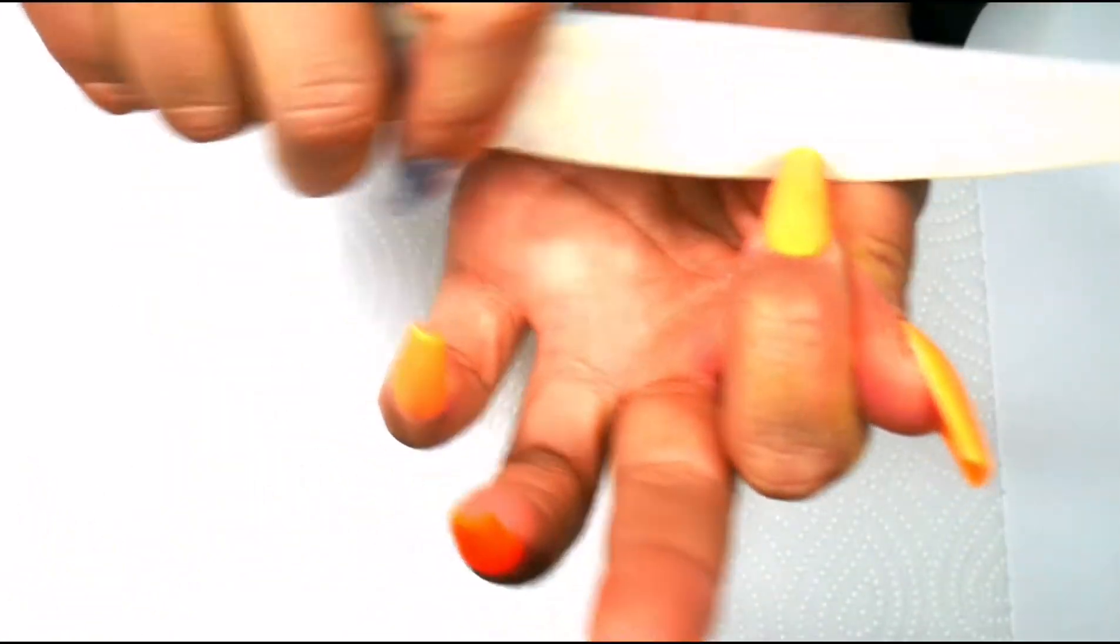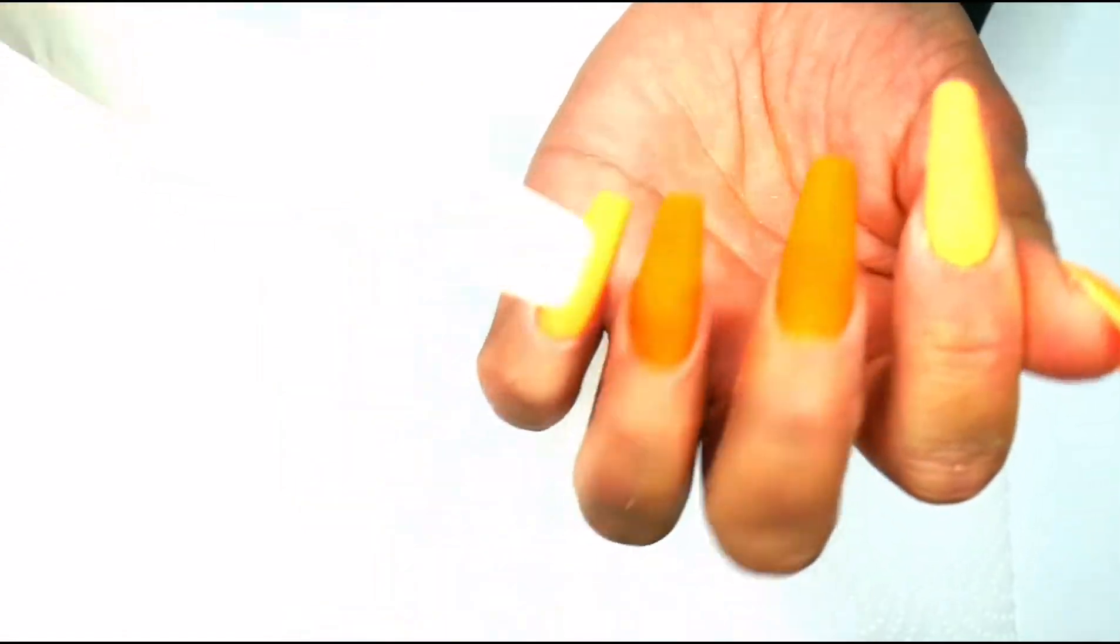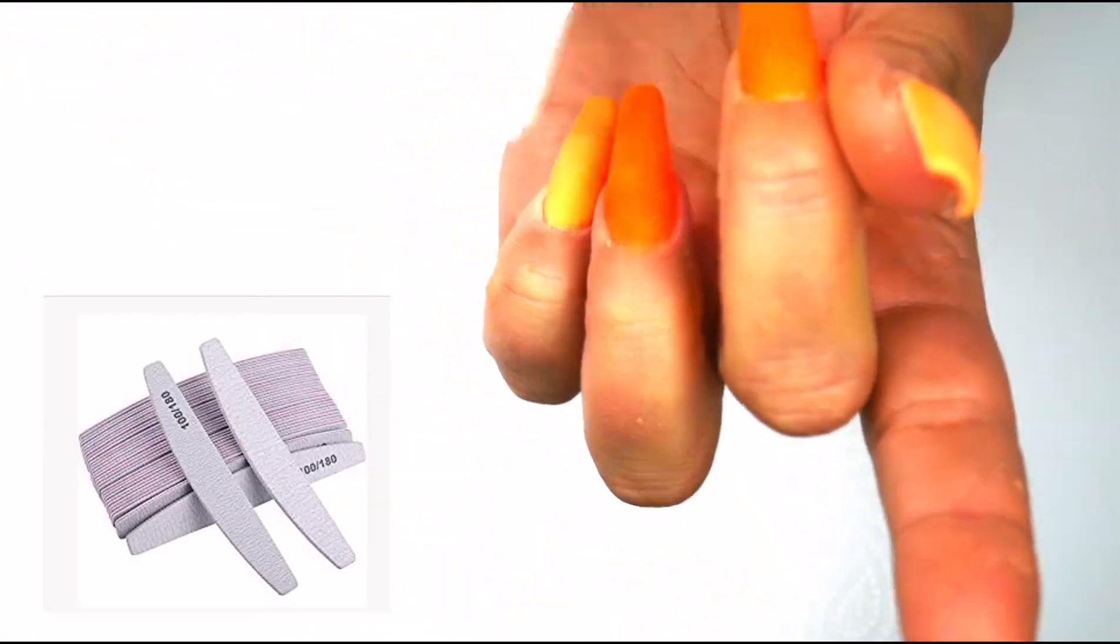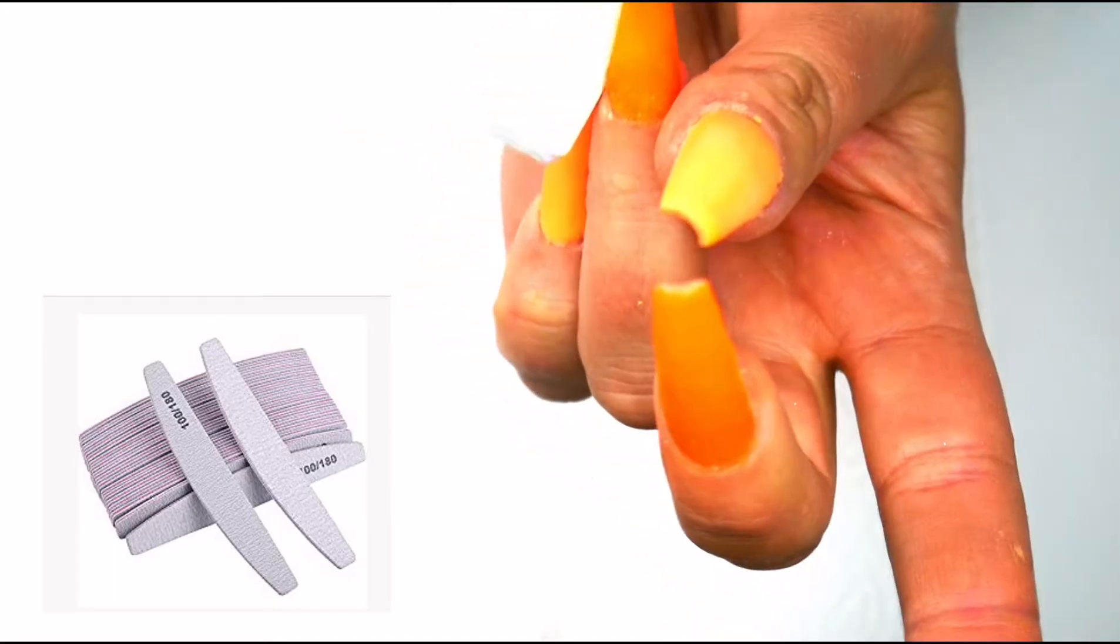I just want to go over them with a quick file and this is just like 180 grit and just crisping up the shape a little bit and get rid of any lumps and bumps but do not be heavy-handed. This will file off easily.